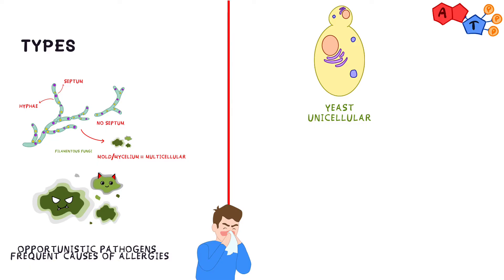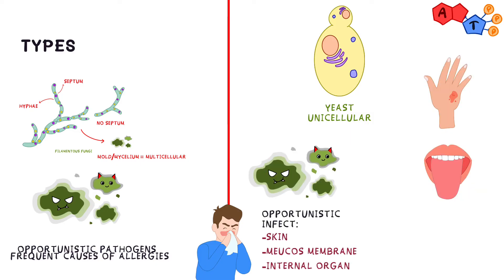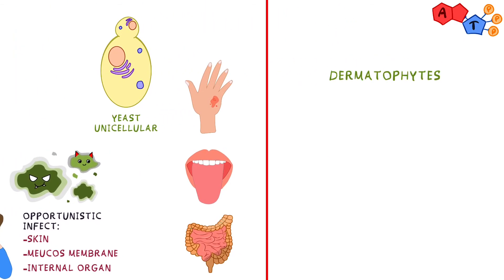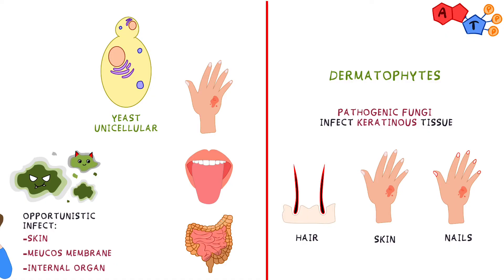Yeasts, like molds, are also opportunistic pathogens. They can infect the skin, mucous membranes, and internal organs. Another unique group of fungi are the dermatophytes, which are pathogenic fungi that infect keratinous tissue and are able to invade the hair, skin, and nails of a living host. Moving on to the types of reproduction: